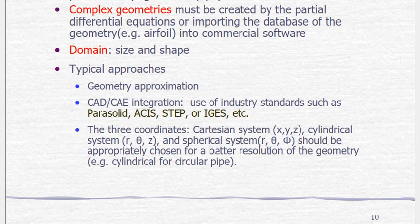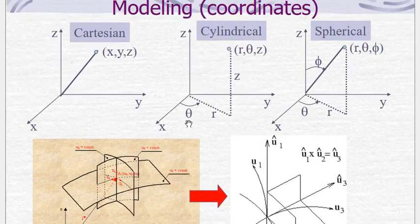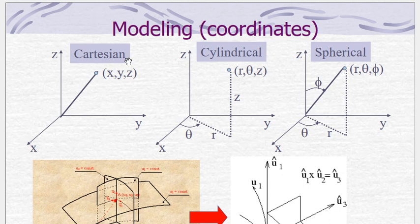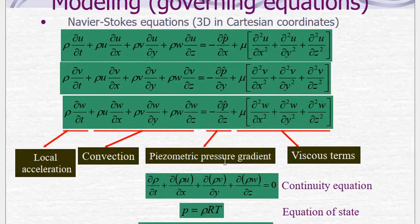Let's consider heat conduction equations for a circular pipe. In heat and mass transfer, we have three coordinate systems: the Cartesian coordinate system, the cylindrical coordinate system, and the spherical coordinate system. In Cartesian coordinates there are three axes — X, Y, and Z. In cylindrical coordinates we have R, theta, and Z including rotations. In spherical coordinates there are two angles — theta and phi.